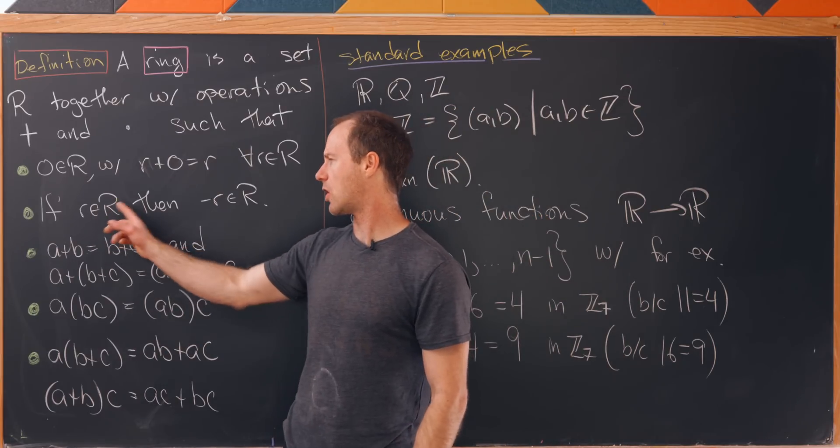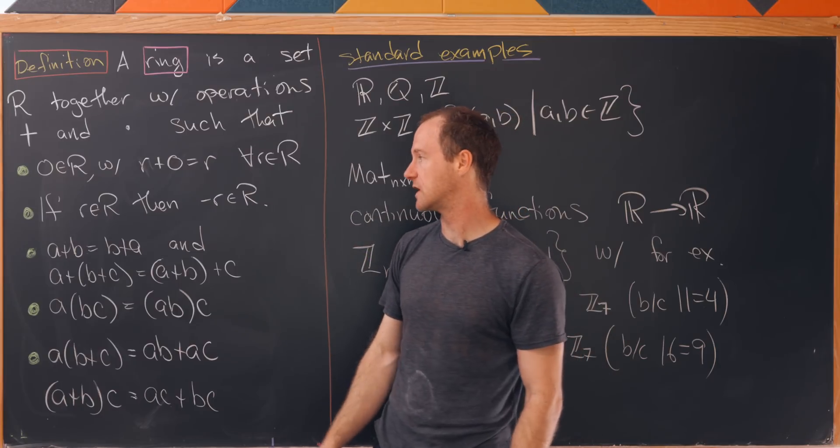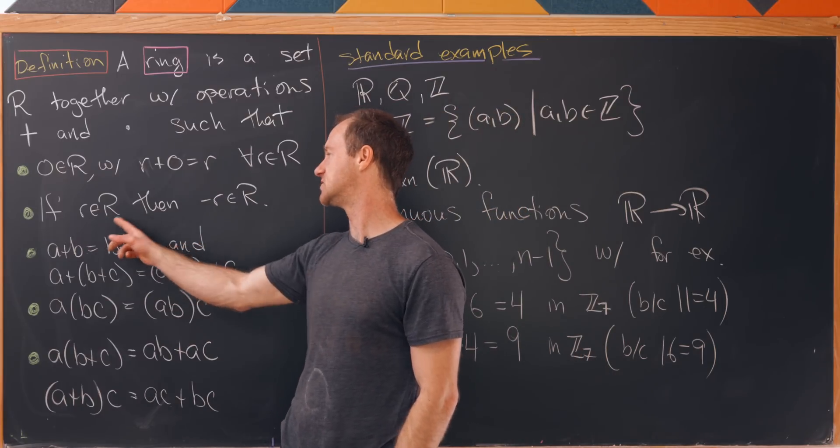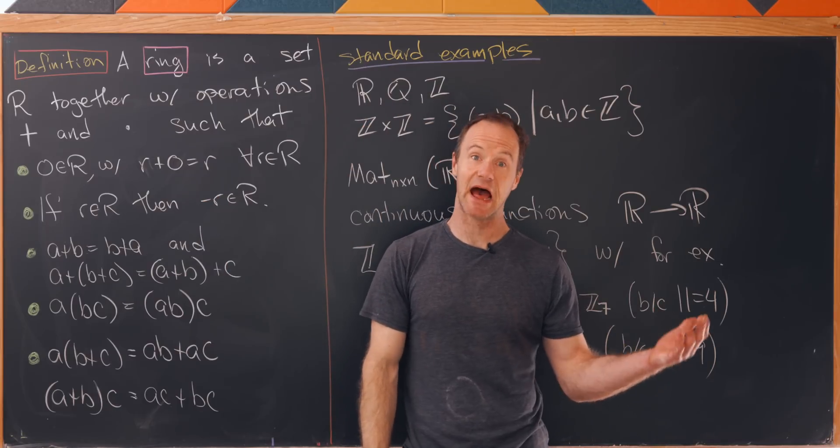If you've got an element r in the ring then something we'll call negative r is also inside the ring. The important thing here is that if you add these two together you get zero. That means everything has an additive inverse.